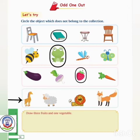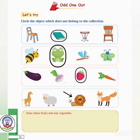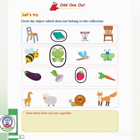Now look at this picture of animals and observe which does not belong to the collection. The first is a giraffe, the third is a lion, and the fourth is a fox. Sheep is different from all of these because sheep is not in the category of wild animals. So we will put a circle over it.